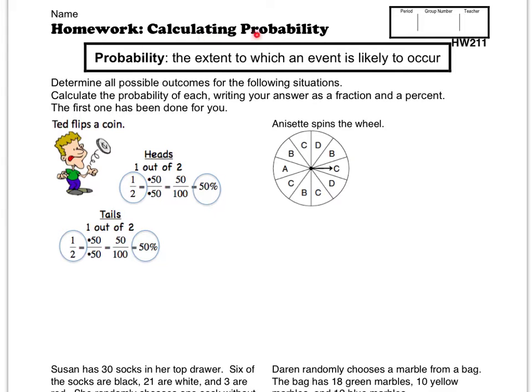We're going to jump right in with calculating probability. Probability, the extent to which an event is likely to occur. Basically how much an event is likely to happen.